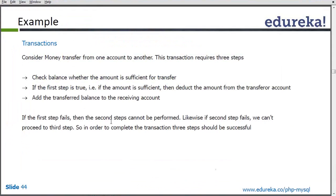For example, we have to transfer money from one account to another. In that case, first we check if the amount is sufficient in our account. If it is fine, we deduct the amount and transfer it to the next account. This is a cycle that should go through. This cycle is done in a transaction so that if anything unexpected occurs, we can roll back and come back to our initial stage.